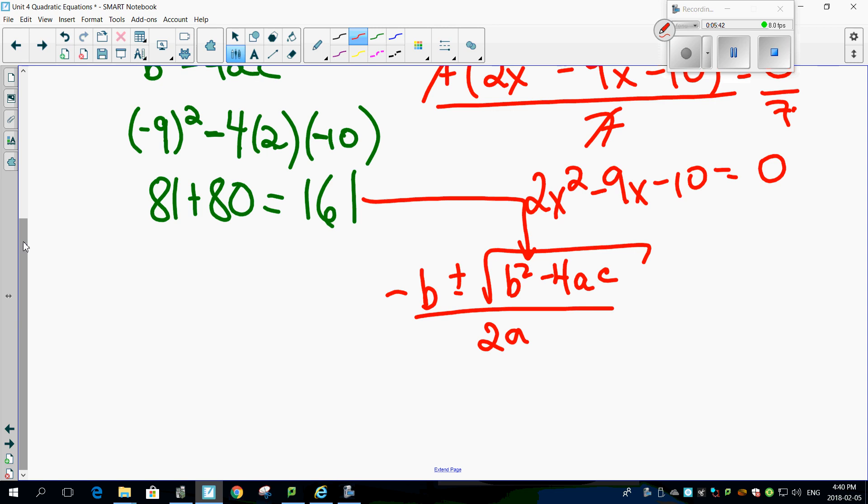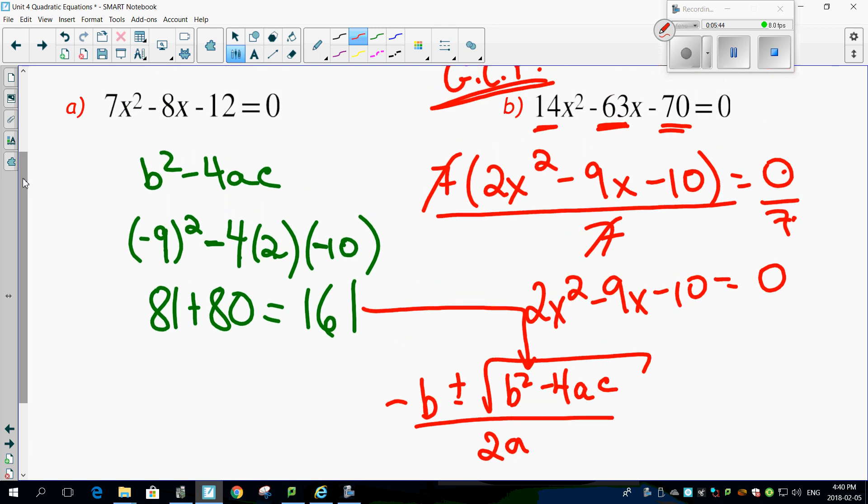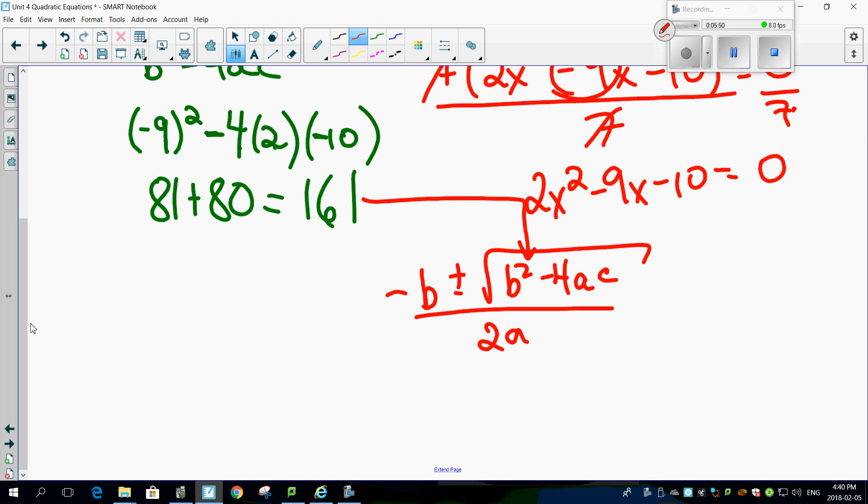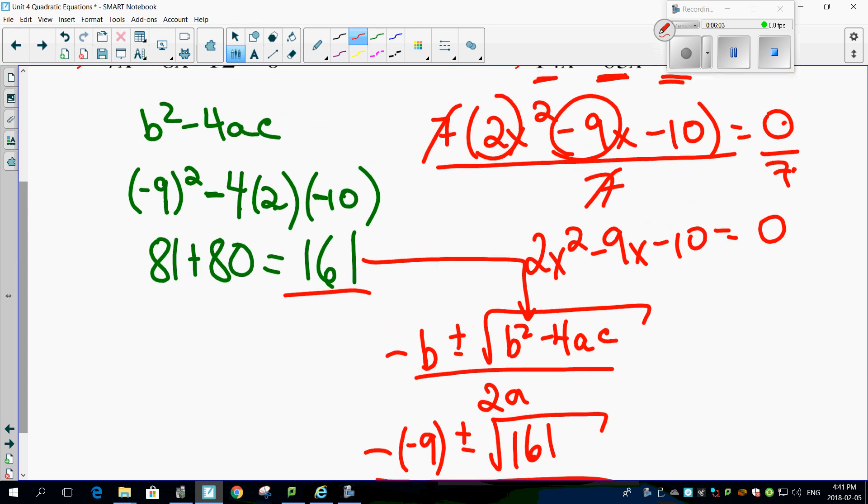Now, what was B again? Let's go back to our original question. Original question, B was minus 9. So here we go. Minus a minus 9, plus or minus the discriminant we know is 161, square root of 161, over 2 times A. A was 2.